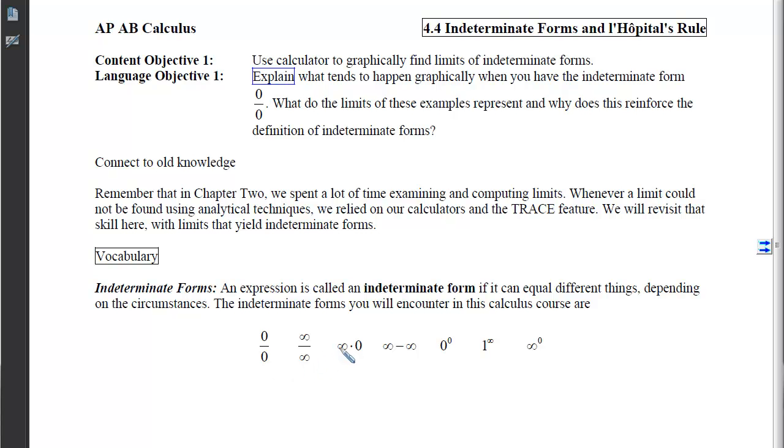The indeterminate forms you will encounter in this calculus course are 0 over 0, infinity over infinity, infinity times 0, infinity minus infinity, 0 to the 0, 1 to the infinity, or infinity to 0.